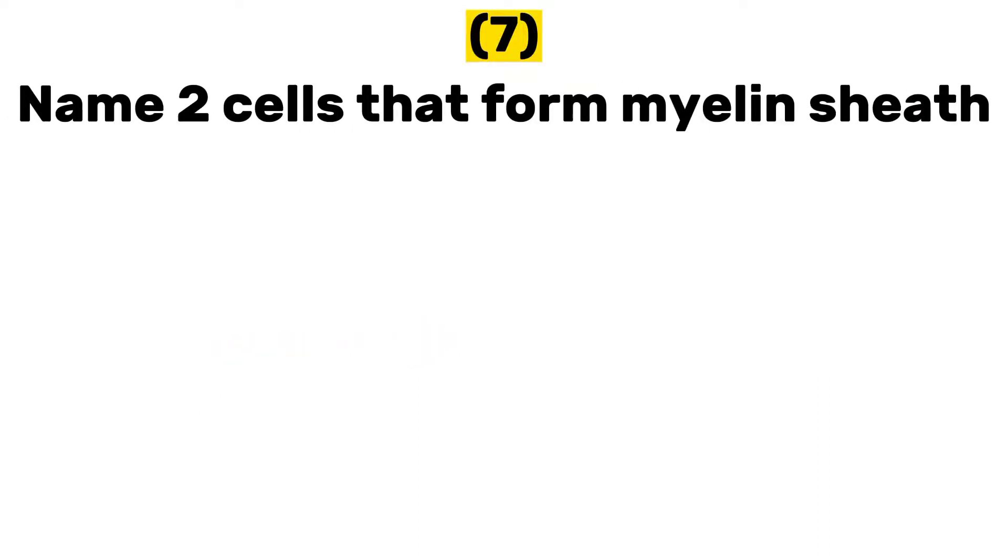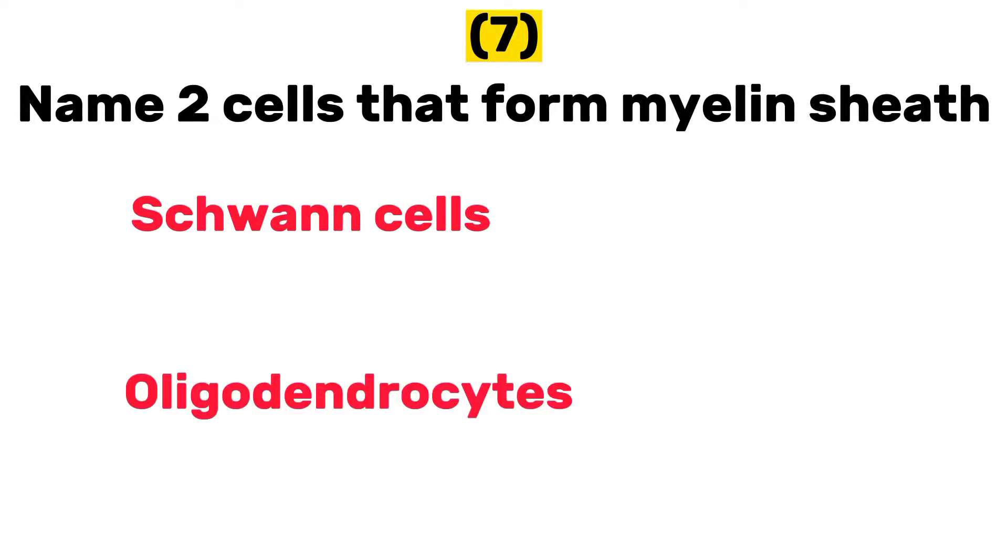Schwann cells and oligodendrocytes. The Schwann cells form myelin sheaths in the peripheral nervous system, while oligodendrocytes form myelin sheaths in the central nervous system.